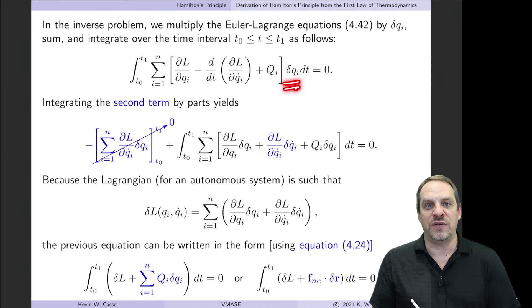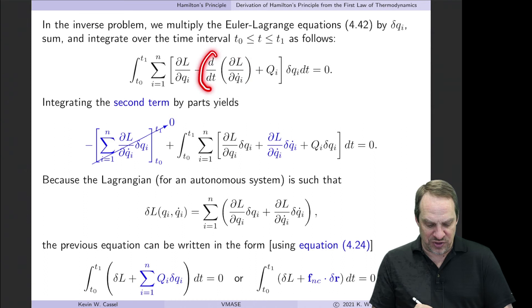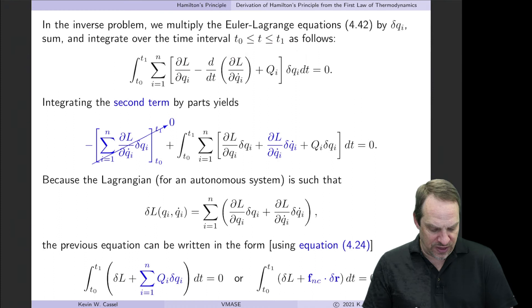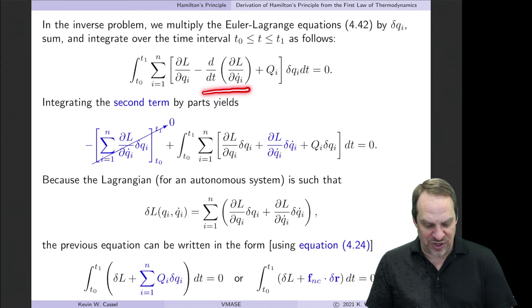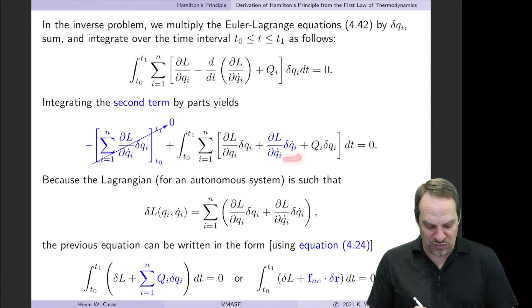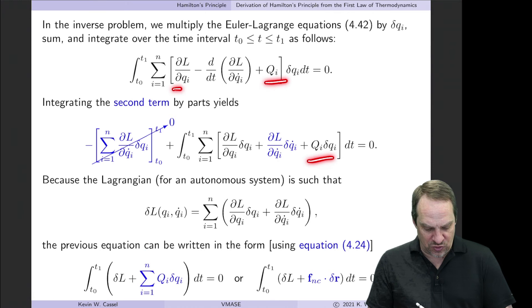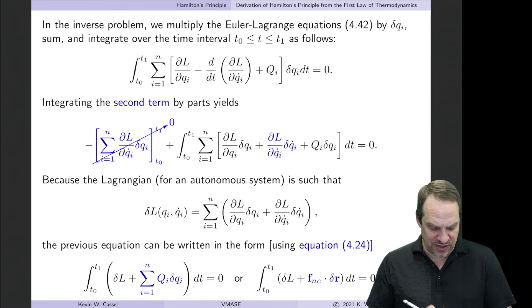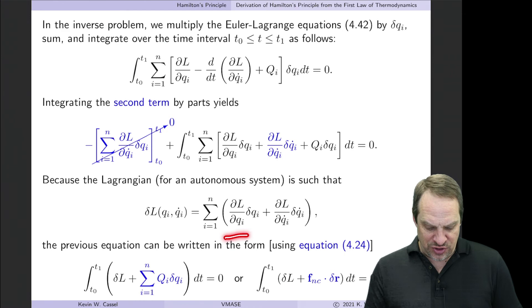Starting with the Euler-Lagrange equations, we multiply each by the variation δqᵢ of its corresponding dependent variable and integrate over time, setting the result equal to zero. Looking at the second term, we integrate by parts to move the time derivative off ∂L/∂q̇ᵢ and onto δqᵢ. The boundary terms vanish because q is known at the endpoints, giving minus ∂L/∂q̇ᵢ times δq̇ᵢ.